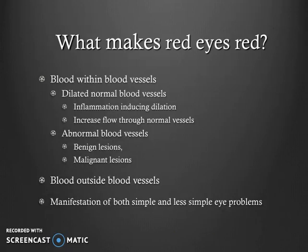When approaching the conjunctival and scleral causes, we must first consider: what makes the red eye red? It can be blood within the blood vessels — dilated, normal blood vessels that are dilated because of inflammation or increased flow can cause the eye to look red — or there can be abnormal blood vessels related to benign or malignant lesions. Blood outside the blood vessels can also make the eye look red, and this looks different. Blood outside blood vessels looks more confluent, whereas blood within blood vessels, you can see individual vessels.